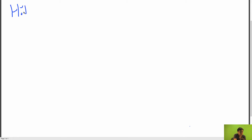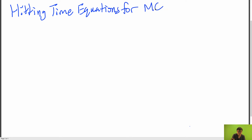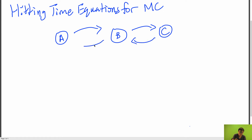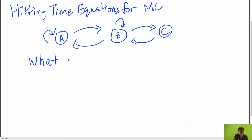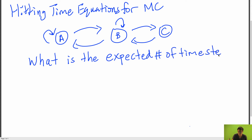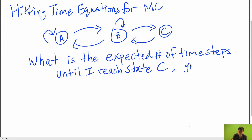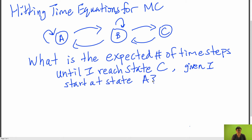Let's go over hitting time equations for Markov chains. So let's draw out just some Markov chain. What hitting time equations ask is: if I start at state A, what is the expected number of time steps until I reach state C? These are the type of questions that hitting time equations try to answer.